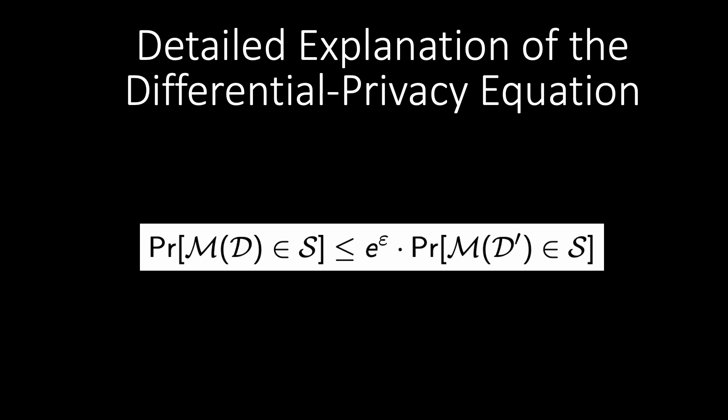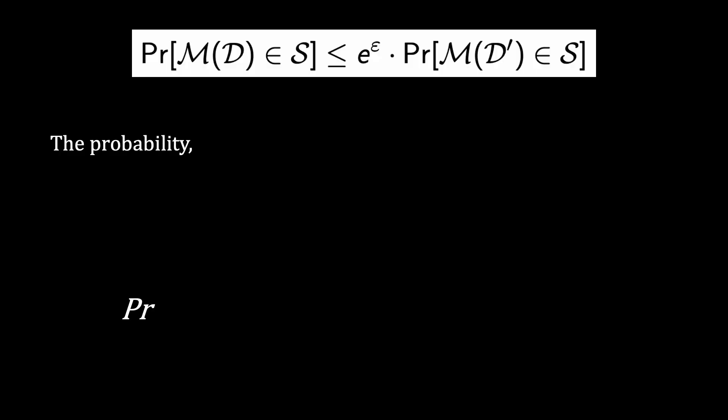The equation means the probability that a mechanism M, and M could be a function, a query, for example a count query, an average query, so the probability that this mechanism applied on a database D.